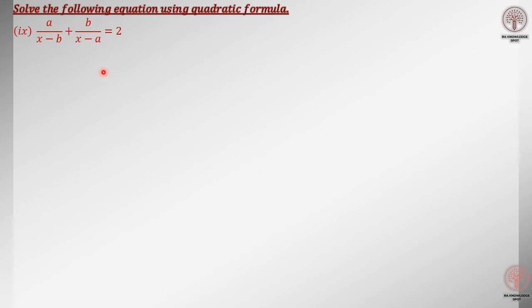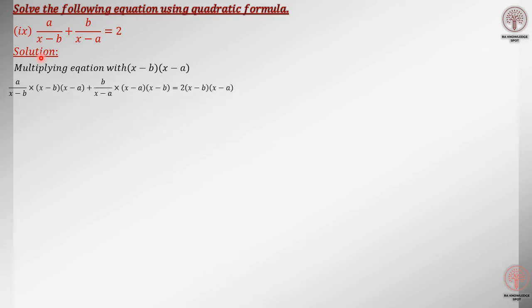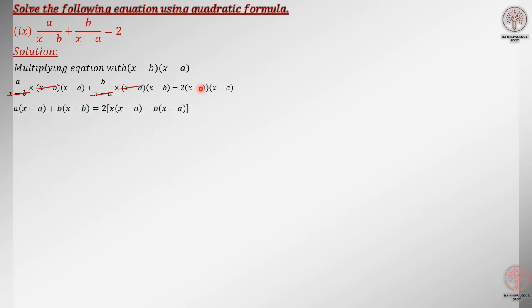Moving to the next part — quite hard and very lengthy. The question is: a divided by (x minus b) plus b divided by (x minus a), equal to 2. The LCM of the equation is (x minus b) and (x minus a). We multiply the whole equation with these two LCM terms. After cancellation, you can see the cancellations coming one by one.